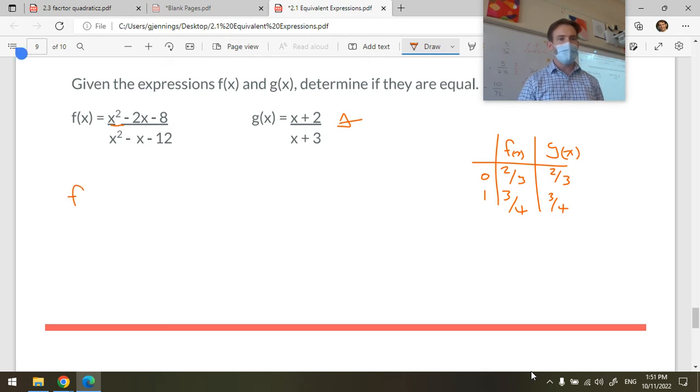Okay, f of x: factor the numerator, factor the denominator. x squared minus 2x minus 8 factors into what? So that's what the numerator factors into, and the denominator multiplies to negative 12, adds to negative 1. Yeah, x minus 4 times x plus 3. Am I going fast now? Yeah. Factor your trinomials.